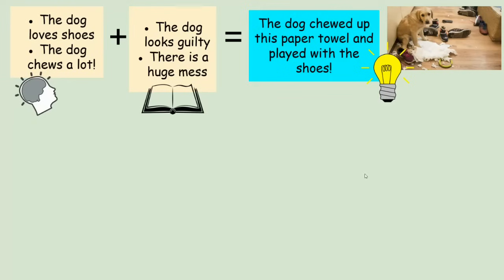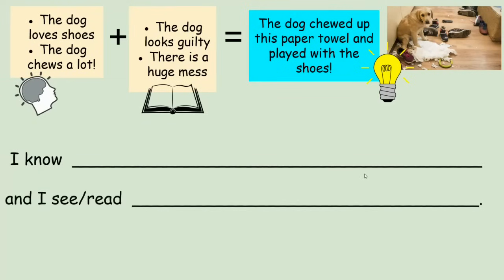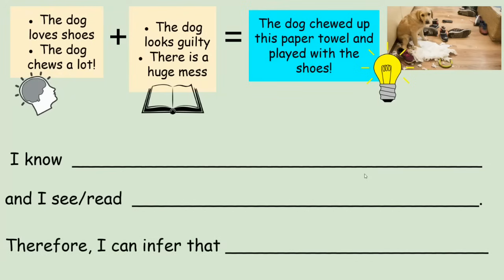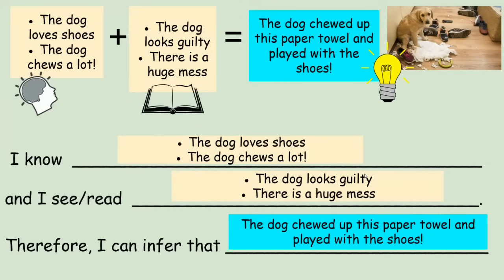Here's another way we can say or write an inference: 'I know blank, and I see or and I read blank — therefore I can infer that blank.' So: I know the dog loves shoes and the dog chews a lot, and I see the dog looks guilty and there's a huge mess — therefore I can infer that the dog chewed up this paper towel and played with the shoes.